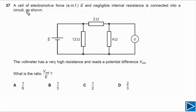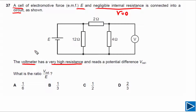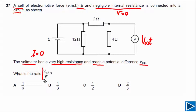Let's try to understand what is given to us for this question. It is given that a cell of electromotive force has negligible internal resistance, which simply means that small r is equal to zero. The voltmeter has a very high resistance, meaning we can treat this as an ideal voltmeter with no current passing through it. It is also given that the voltmeter reads a potential difference equal to Vout, and the question asks us to find the ratio between Vout and E.